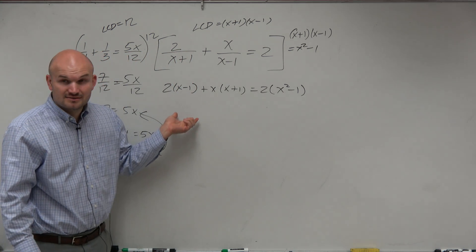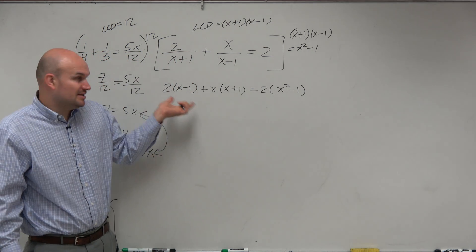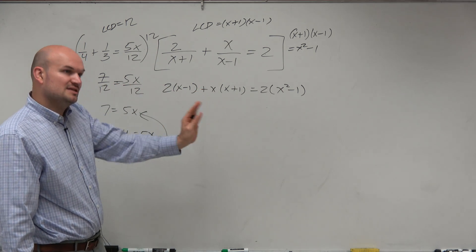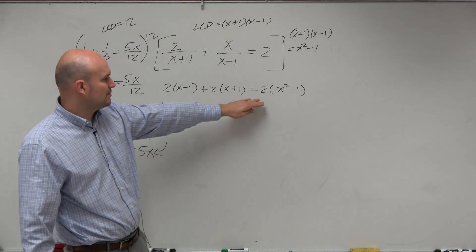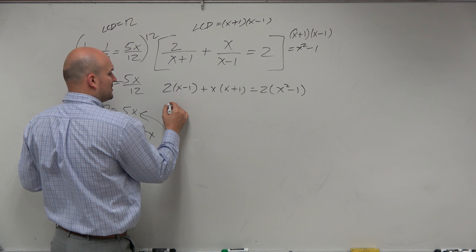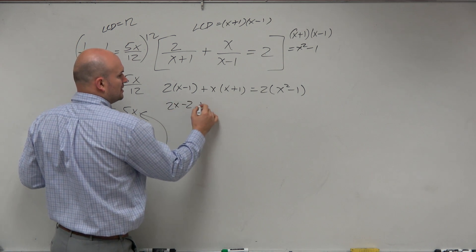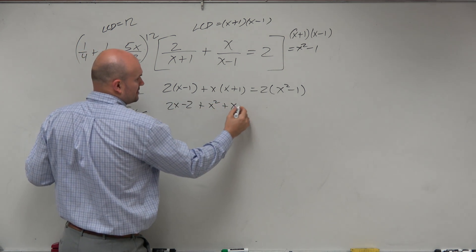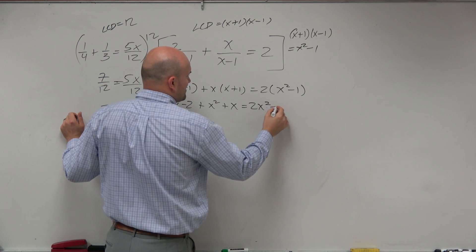So we could say 2 times x squared minus 1. Now, guys, I mean, this is algebra 1 all over again. It's just combining like terms and then getting them set equal to 0 since we know we're going to have a quadratic. So let's work it out. We get 2x minus 2 plus x squared plus x equals 2x squared minus 2.